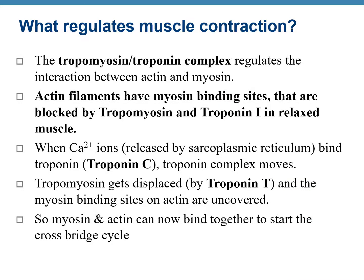At the molecular level, actin myofilaments have special binding sites for myosin. However, in a relaxed muscle, these binding sites are blocked by a protein called tropomyosin, and a third protein called the troponin complex keeps tropomyosin firmly in place. Before muscular contraction, calcium ions are released by the sarcoplasmic reticulum. These calcium ions bind to the troponin C subunit of the troponin complex, moving the troponin complex. When troponin is displaced it also moves tropomyosin, so with both tropomyosin and troponin displaced, the binding sites on actin are exposed. Now the myosin head can bind with actin and actin can slide over myosin, causing muscular contraction.